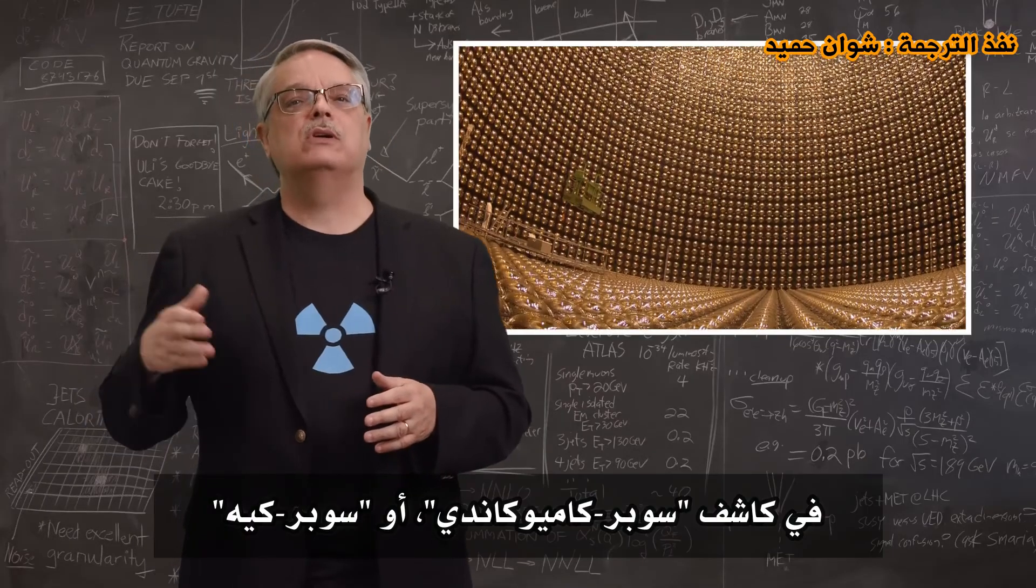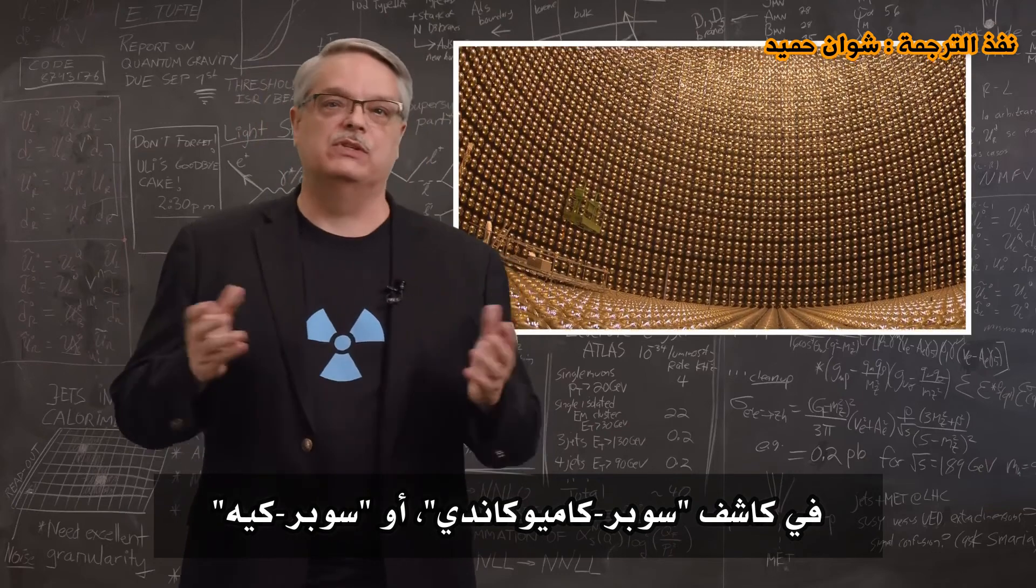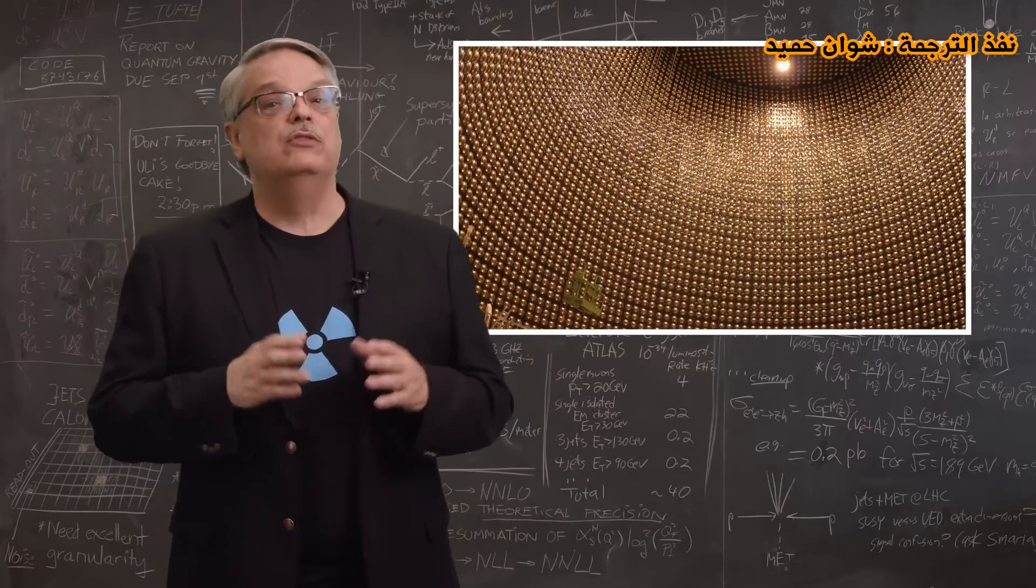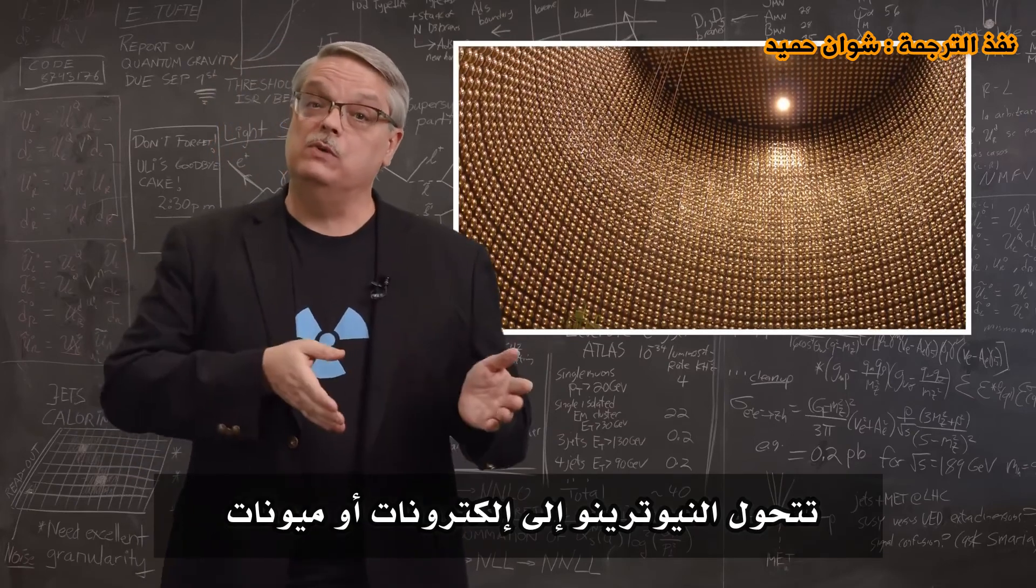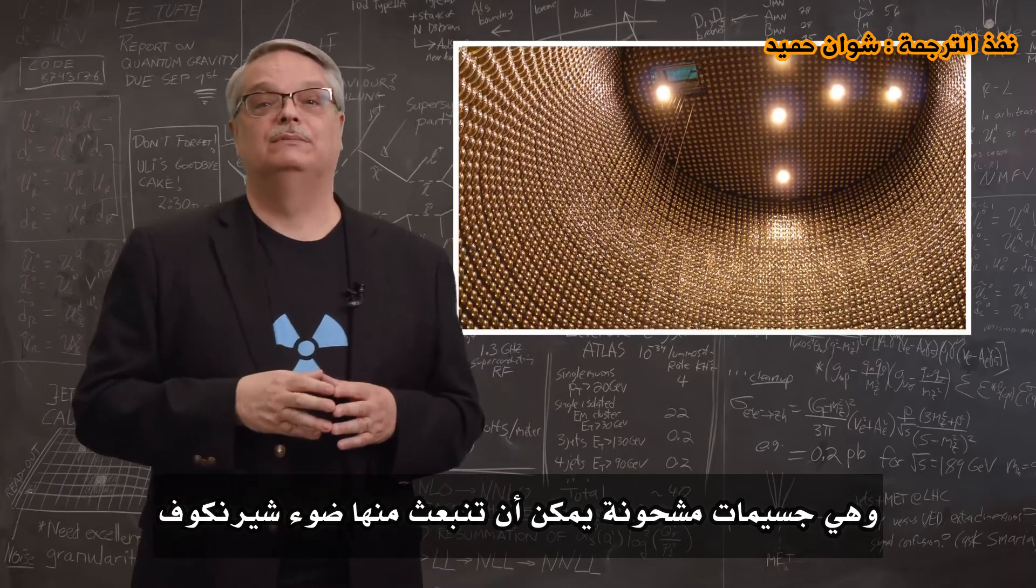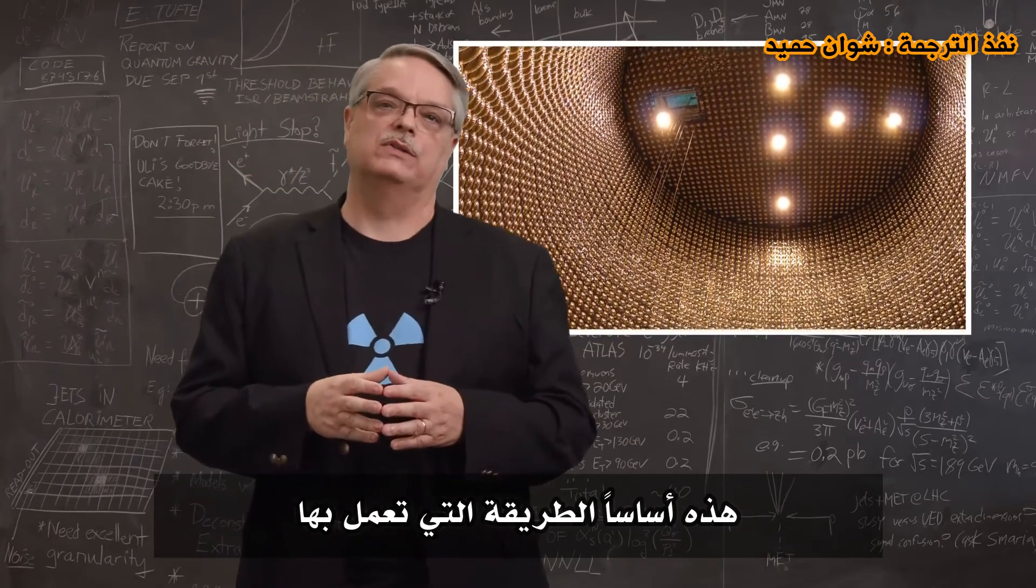In the Super-Kamiokande detector, or Super-K as it's often called, neutrinos enter and interact with the water. The neutrinos convert into electrons or muons, which are charged particles that can emit Cherenkov light. That's basically how it works.